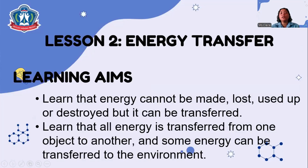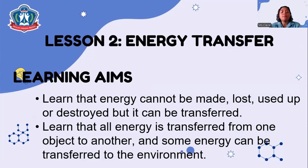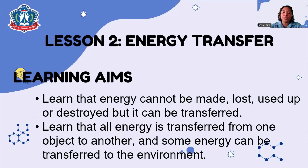Now let's move on to Lesson 2: Energy Transfer. The learning aims are to learn that energy cannot be made, lost, used up, or destroyed, but it can be transferred. We will also learn that all energy is transferred from one object to another, and that some energy can be transferred to the environment.